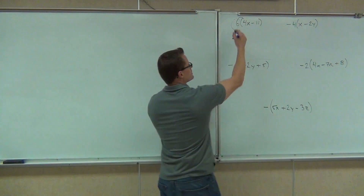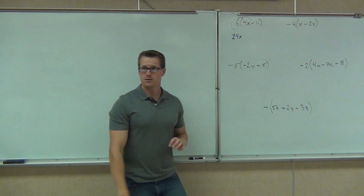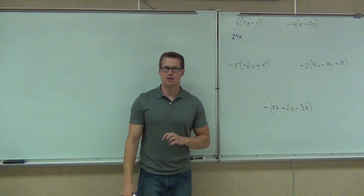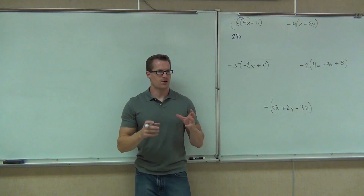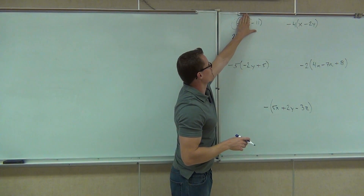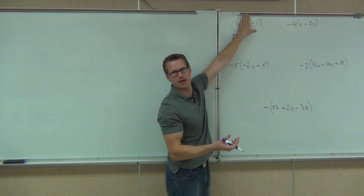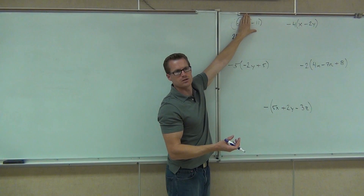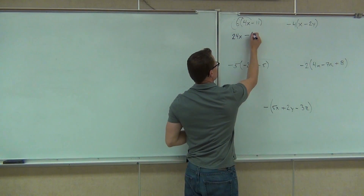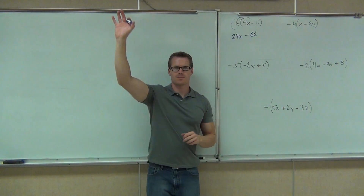Then we multiply the six times what? Minus 11. You've got to think about that with the sign. So here, we do six times negative 11 — you get negative 167. So we have to put minus 167. That's exactly right. How many of you got that?